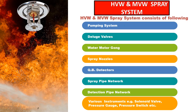The major components of both high velocity and medium velocity water spray systems are: pumping system, deluge valves, water motor gong, spray nozzles, QB detectors, spray pipe network, detection pipe network, and various instruments like solenoid valve, pressure gauge, pressure switch, etc.